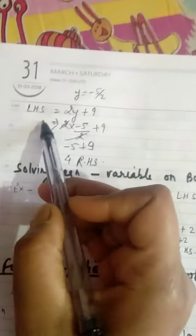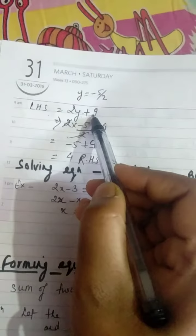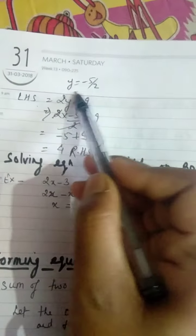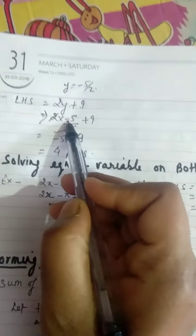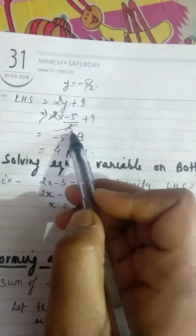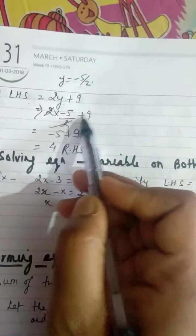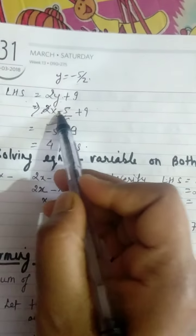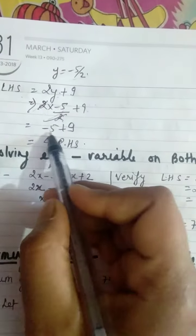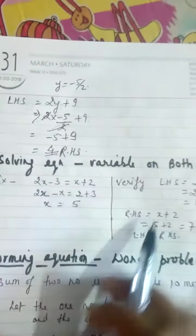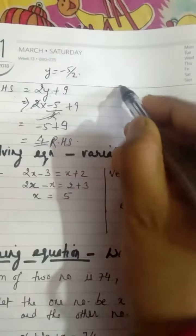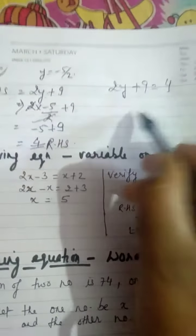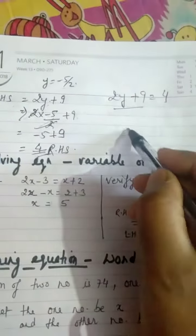Now we verify: LHS is 2y plus 9, and y equals minus 5 upon 2. Putting it in: 2 into (minus 5 upon 2) plus 9 = minus 5 plus 9 = 4. The RHS is also 4, so LHS is equal to RHS.